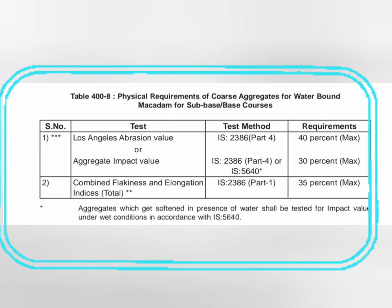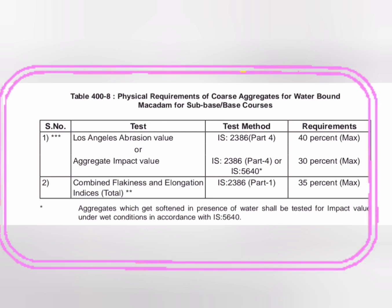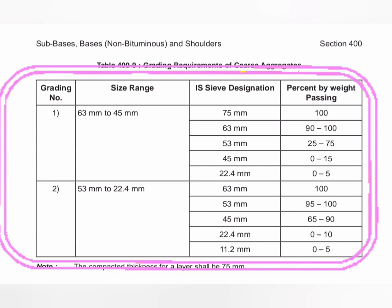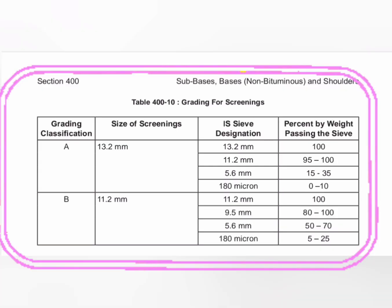Important WBM tables from MoRT&H Section 400: Table 408 covers physical requirements of coarse aggregate for WBM. Table 409 covers grading requirements of coarse aggregate — Grading 1 size range 63 mm to 45 mm, Grading 2 size range 53 mm to 22.4 mm. Table 410 covers grading for screenings, with two types: 13.2 mm and 11.2 mm sizes.